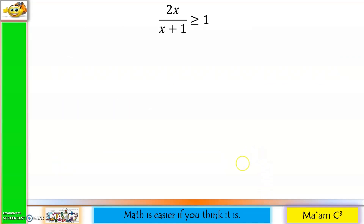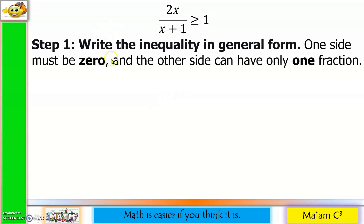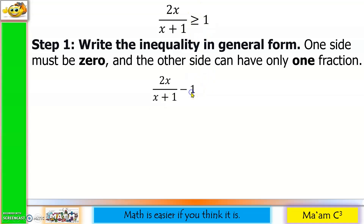The problem is: 2x over x plus 1 is greater than or equal to 1. Step 1: Write the inequality in general form. One side must be 0, and the other side can have only one fraction. Let us copy this as 2x over x plus 1, then move 1 to the other side so it becomes minus 1, greater than or equal to 0.